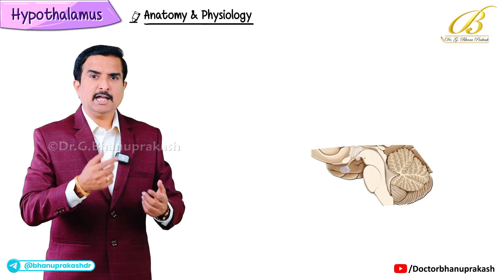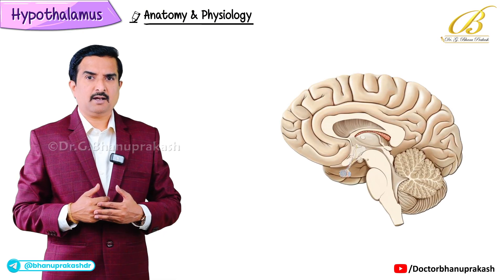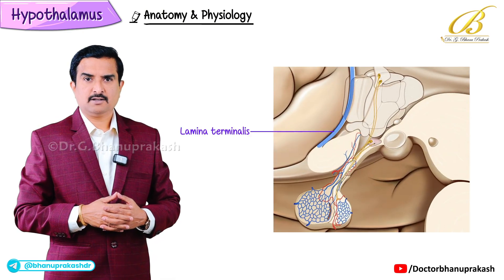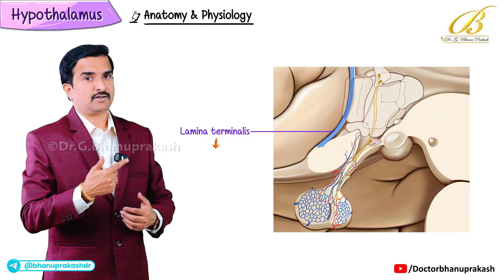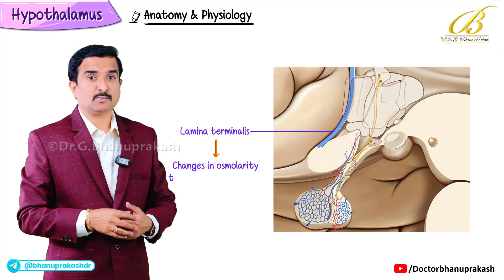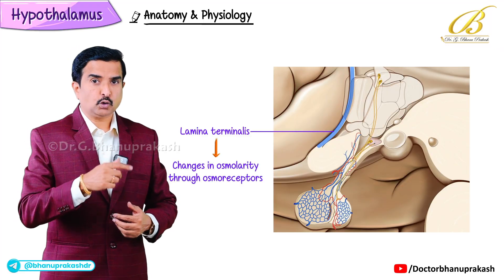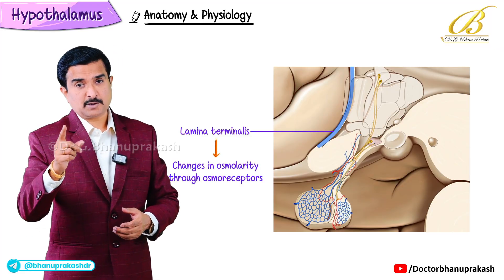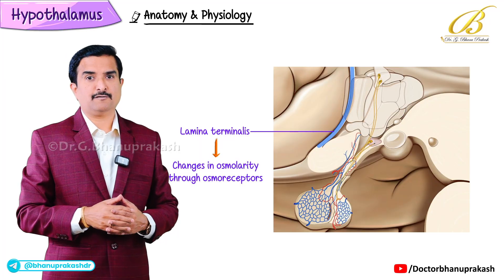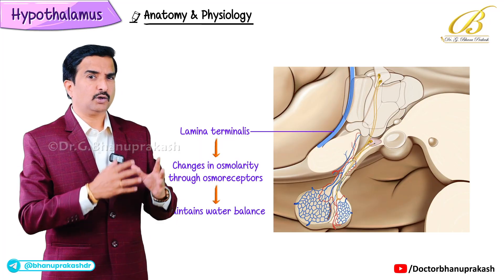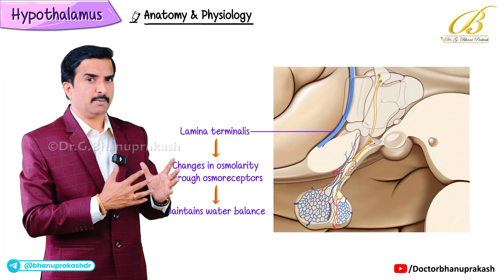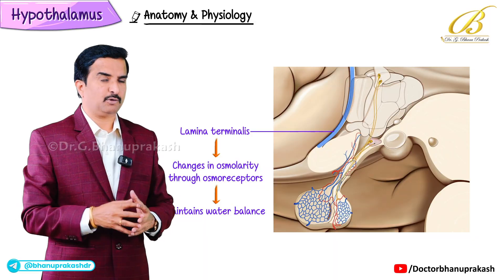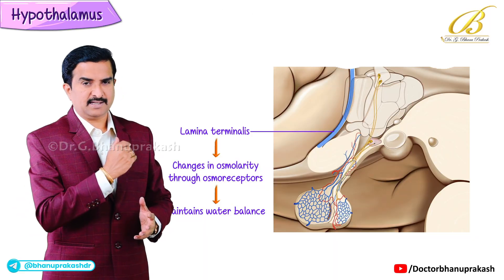Input from the vascular organ of the lamina terminalis senses changes in osmolarity through osmoreceptors. This is especially important for maintaining water balance. These are the two important inputs that the hypothalamus receives.